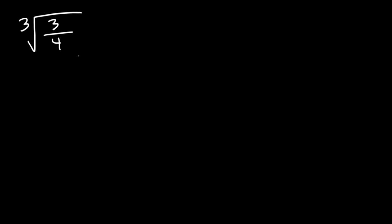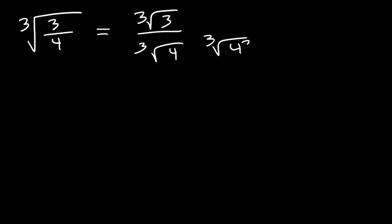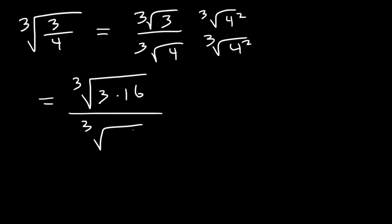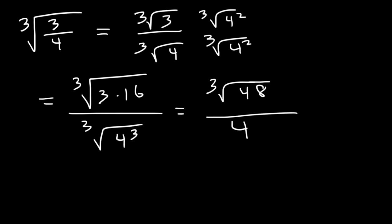Let's simplify the cube root of 3 over 4. First, break it into two radicals. Our goal is to rationalize the denominator, so multiply the top and the bottom by the cube root of 4 squared, so we can get three 4s on the bottom. 4 squared is 16. On the bottom we have the cube root of 4 cubed, which turns into a 4. And 3 times 16 is 48, so the final answer is the cube root of 48 divided by 4.